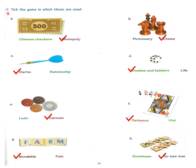This is question number 4: name the game in which these are used. Here are some things given and we have to identify the game in which these are used. The first one you can see is rupees. Rupees are used in the Monopoly game. You have to tick Monopoly, and do the same in your books.